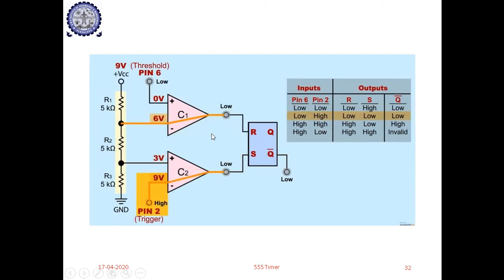Condition 2: pin 2 is high (9V) and pin 6 is low (0V). Since 9V at pin 2 is greater than the 3V reference, comparator 2 output goes low. Since 0V at pin 6 is less than the 6V reference, comparator 1 output goes low. Both S and R are low — the flip-flop stays in the previous state (no change condition). Q-bar remains low as in the previous case.